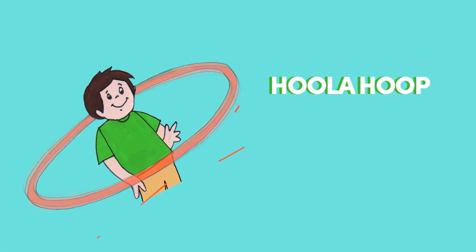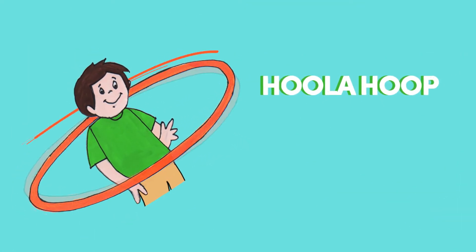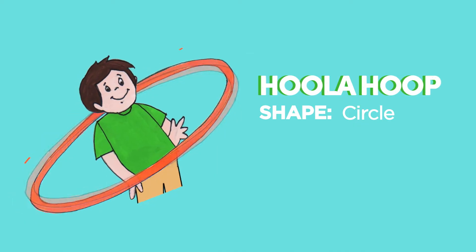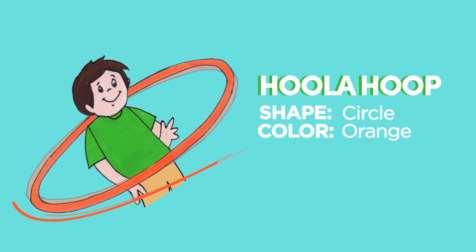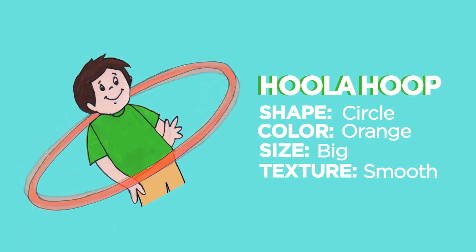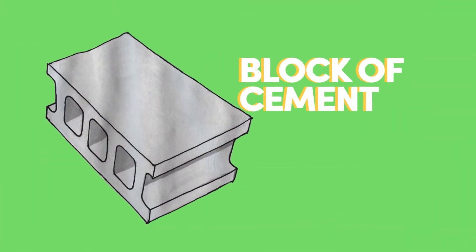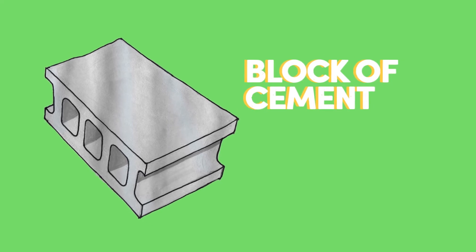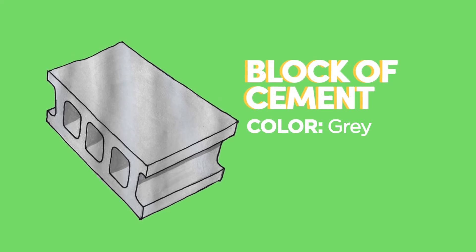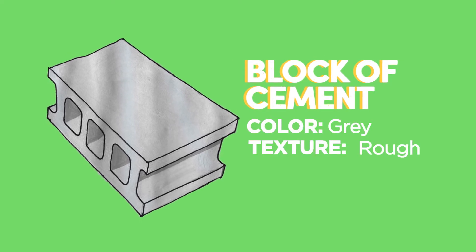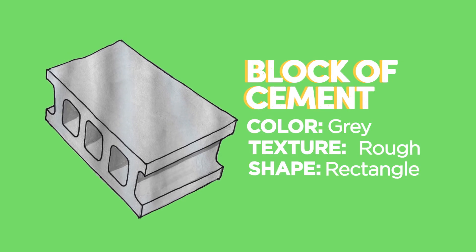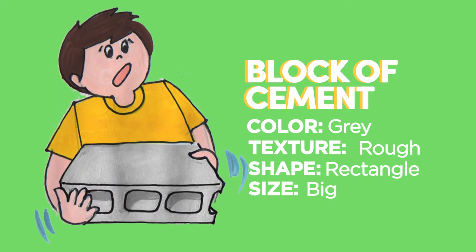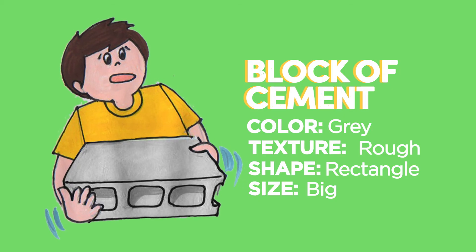How about this hula hoop? It's circular, color orange, big, and smooth. This block of cement is color gray, rough to the touch, rectangular, big, and heavy.